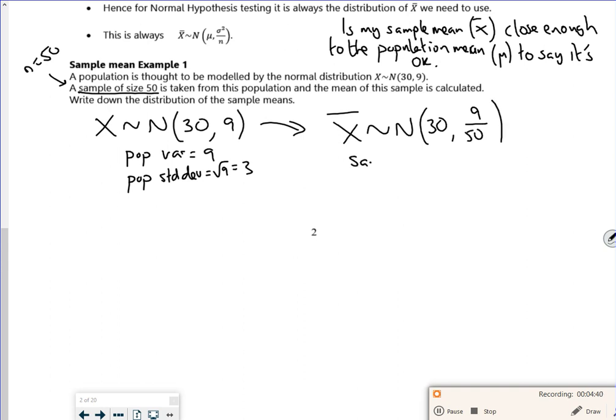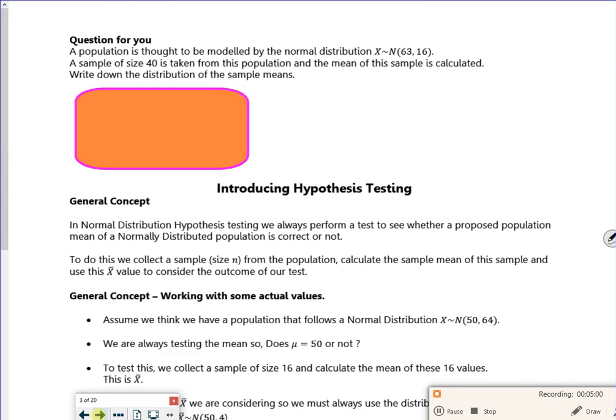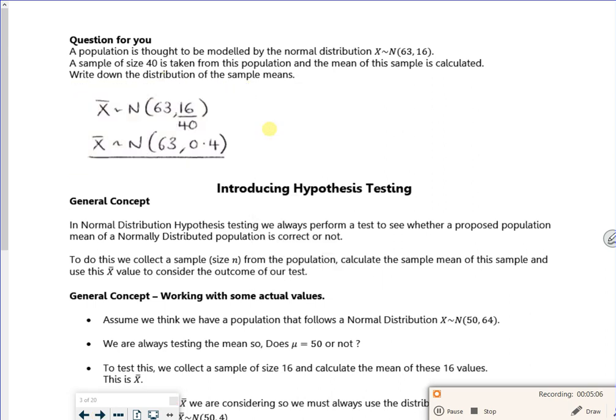So my sample variance is 9 over 50, so my sample standard deviation is √(9/50), and that's what goes in your calculator. There's a couple of examples like this. I've got my 16, and then I've got my sample of 40, so my sample variance is 16 over 40, which is 0.4. So my sample standard deviation is √0.4.